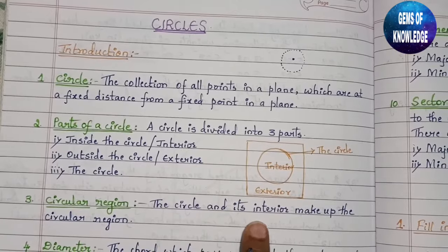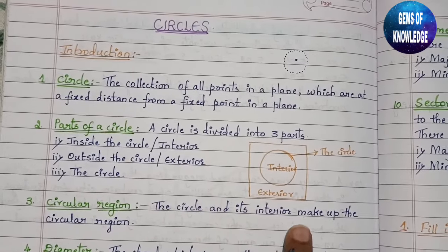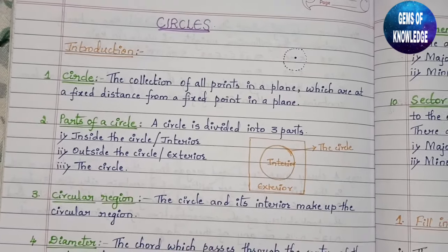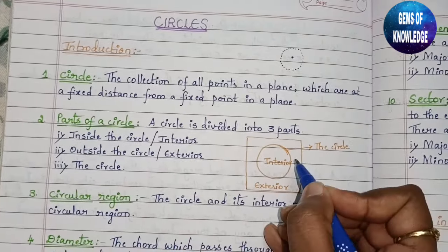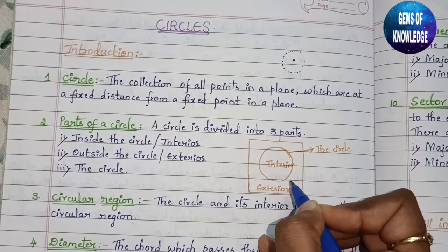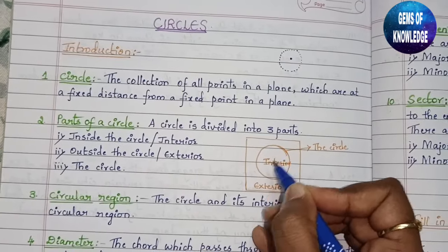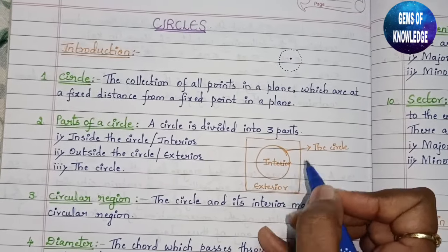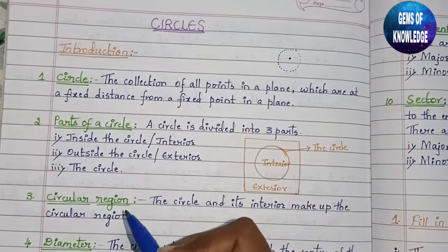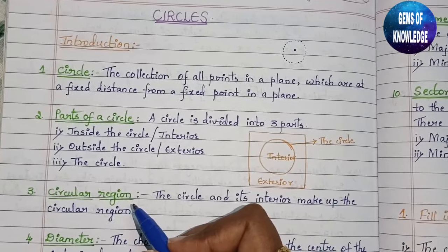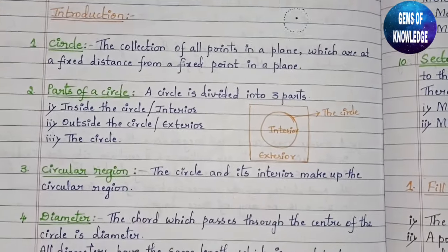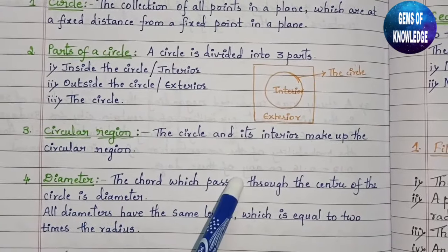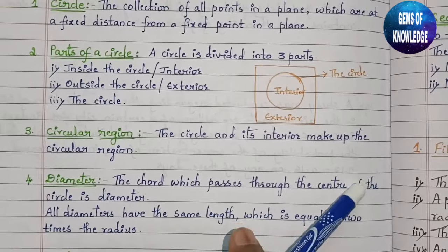The third part is the circular region. The circle and its interior together make up the circular region. So the circle combined with its interior part is known as the circular region.